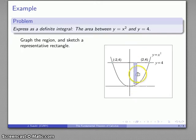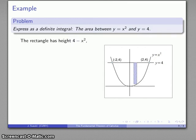I want to know the area of that rectangle, so I need to know the height, which is going to be top minus bottom. Top is on y equals 4, bottom is on this curve y equals x squared, so the height is going to be 4 minus x squared.